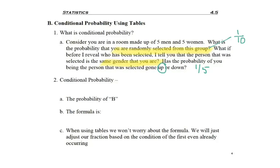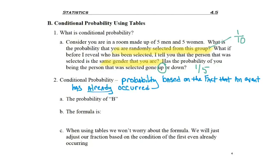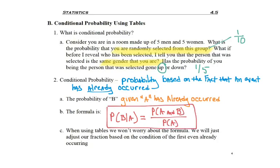So conditional probability is the probability based on the fact that an event has already occurred. We've said this before in a prior section, but the probability of B given A has already occurred. We've written the beginning of the formula, but I didn't tell you how to find it. The probability of B given A is found by taking the probability of A and B at the same time divided by the probability of A.